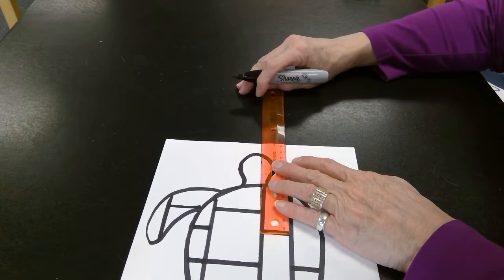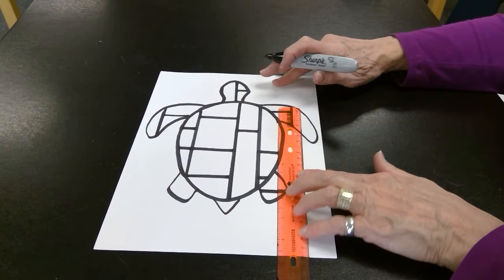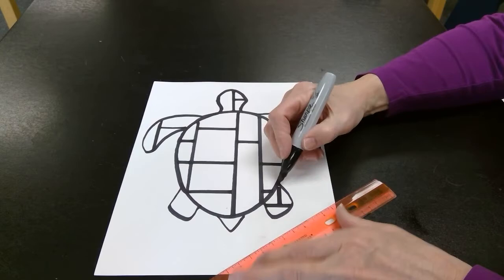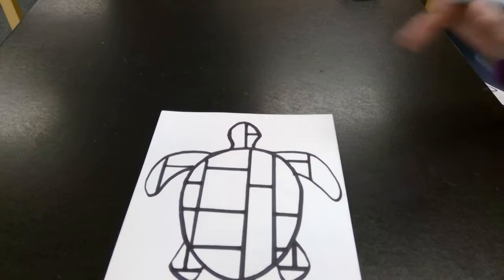Just a couple of lines on the head to continue my design. And on the feet, I'm still basically going vertical and horizontal. No diagonal lines on this project. So there's our turtle.